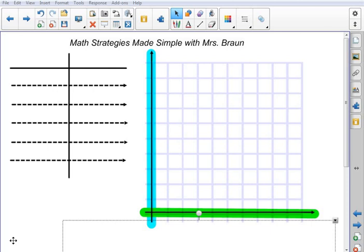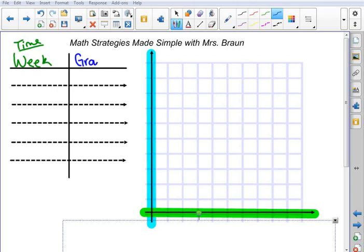For today's example, we're going to be looking at plant growth measured in centimeters on a weekly basis. My x value is going to be time, every week. My y value is going to be growth, measured in centimeters.